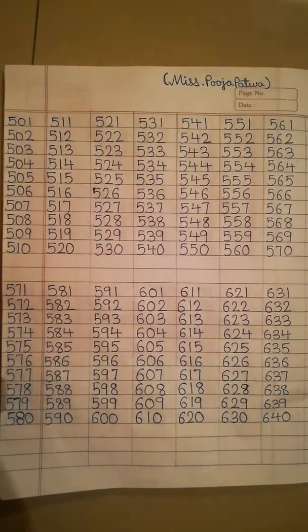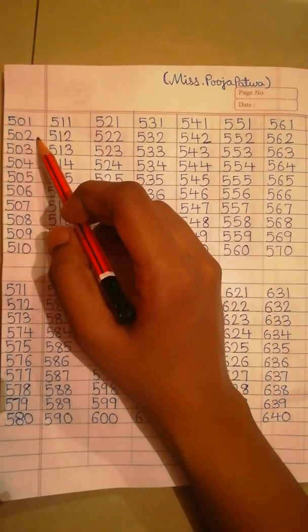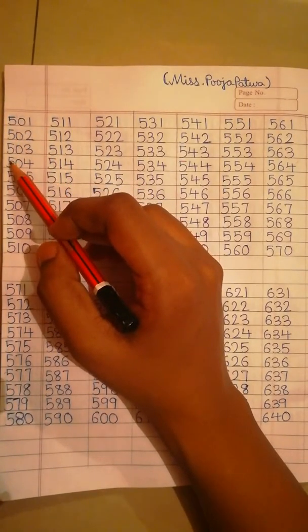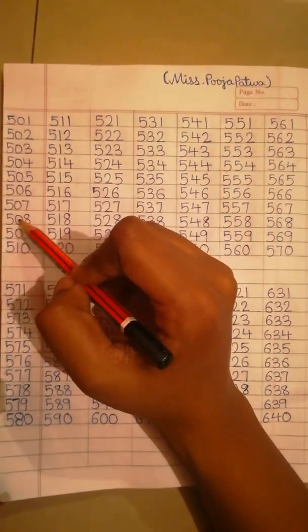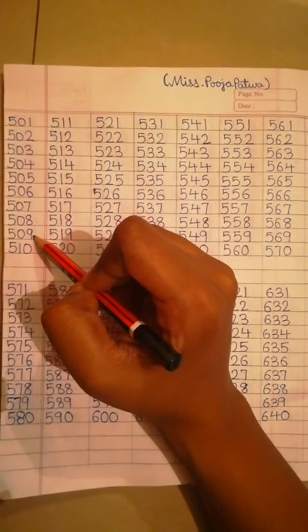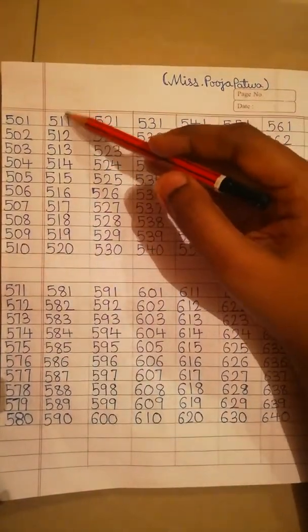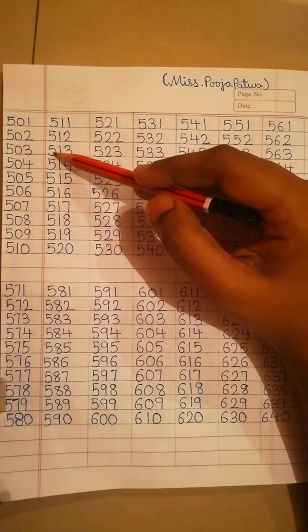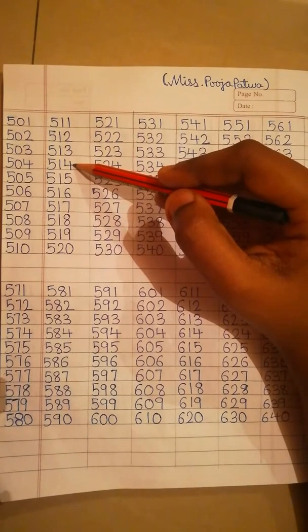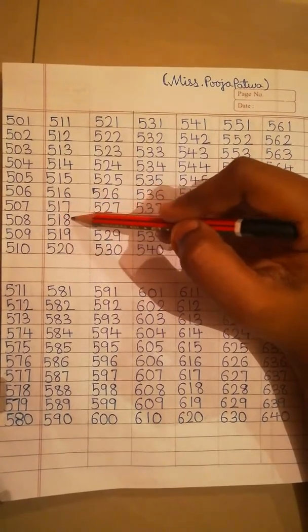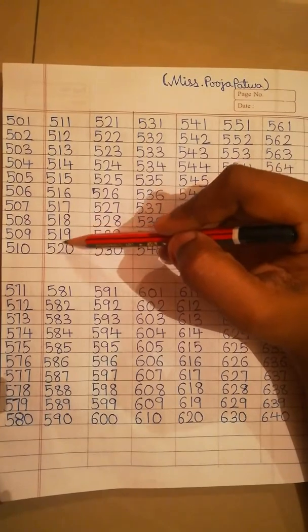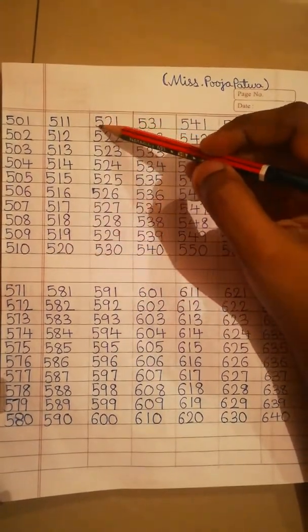Today we learn numbers 501 to 1000. Let's go. Read the number: 501, 502, 503, 504, 505, 506, 507, 508, 509, 510. Next line: 511, 512, 513, 514, 515, 516, 517, 518, 519, 520. Next line: 521.